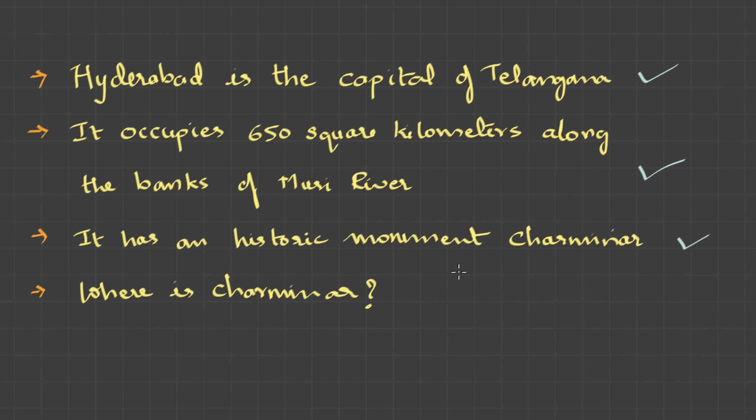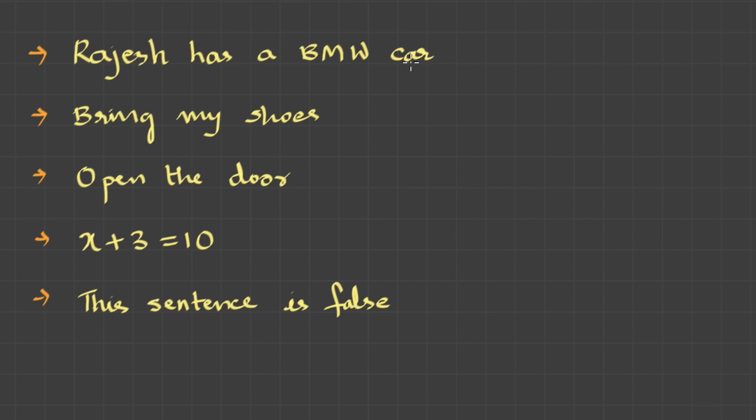Where is Charminar? This is not a FACT, it's a question and questions don't have truth values. So, this is not a proposition. Let me add few more statements. Rajesh has a BMW car. This is indeed a proposition because it's definitely either TRUE or FALSE. But it's just that we don't know who is Rajesh and we are not aware if he has a BMW car or not. One thing is sure, the statement is either TRUE or FALSE but it can't be both. Therefore, it is a proposition. Then bring my shoes, open the door. These are imperative statements that are commands or requests for which we cannot assign any truth value. Therefore, they are not propositions.